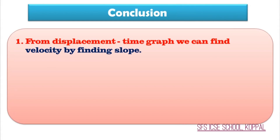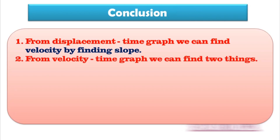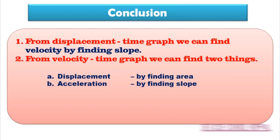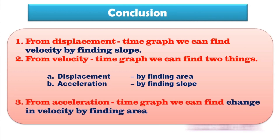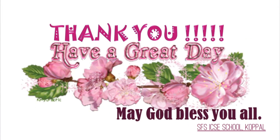Let us conclude. Remember these points. Number 1: from the displacement-time graph, we can find velocity by finding the slope. Number 2: from the velocity-time graph, we can find two things — displacement by finding the area, and acceleration by finding the slope. Number 3: from the acceleration-time graph, we can find the change in velocity by finding the area. That is the end of today's class. Thank you and have a great day.